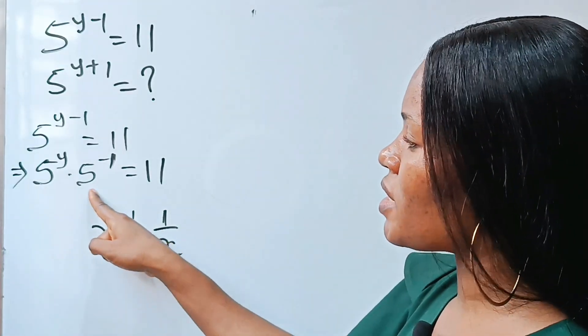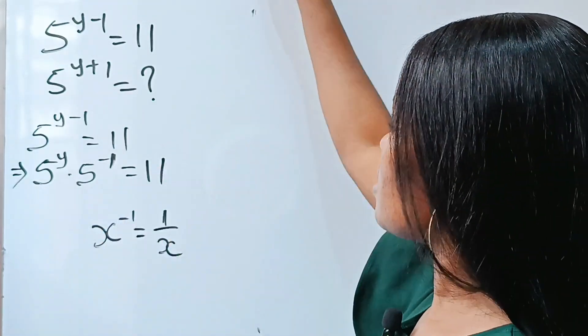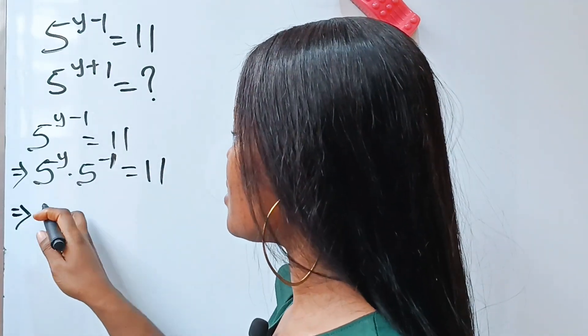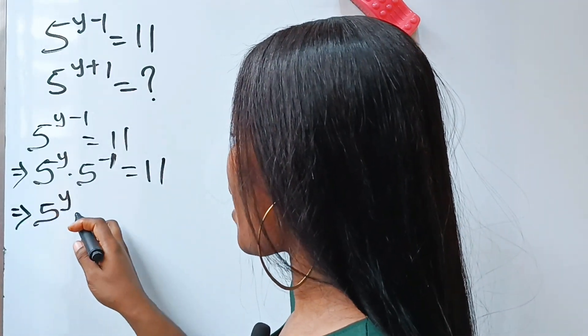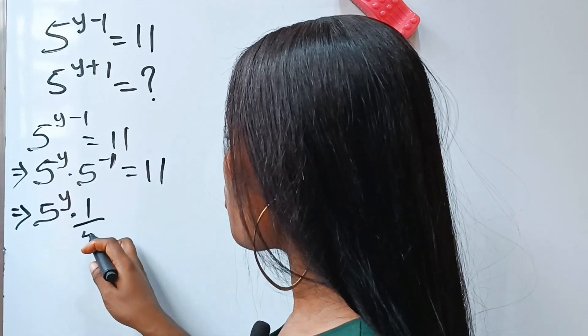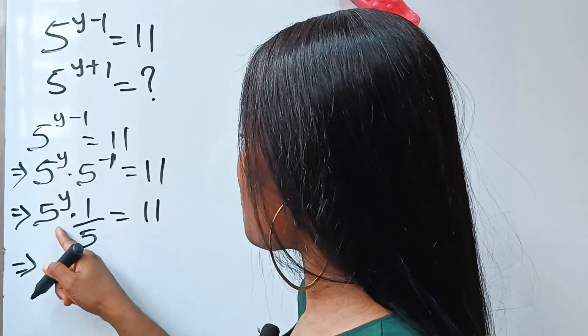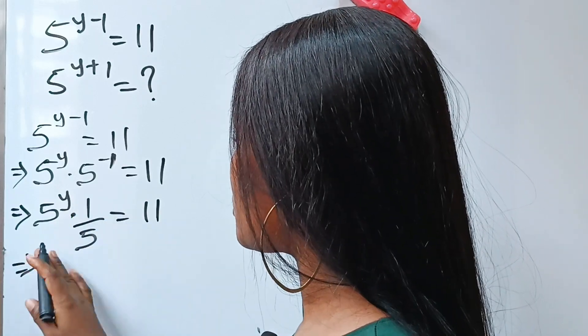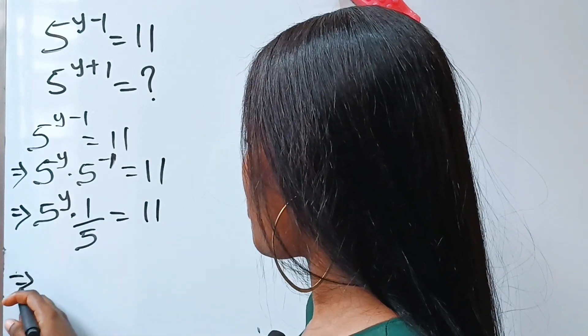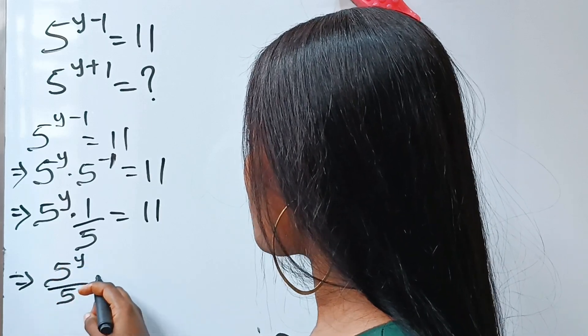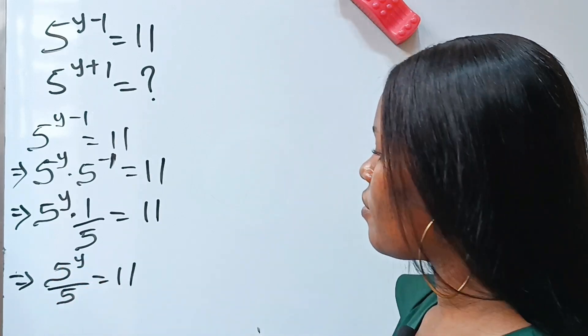So that means that this becomes 1 over 5. We can rewrite this as 5 to the power of y multiplied by 1 over 5 is equal to 11. This implies that 5 to the power of y divided by 5 is equal to 11.